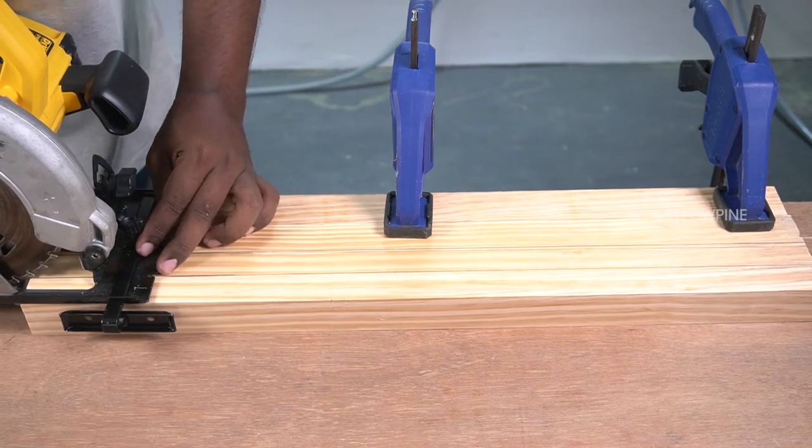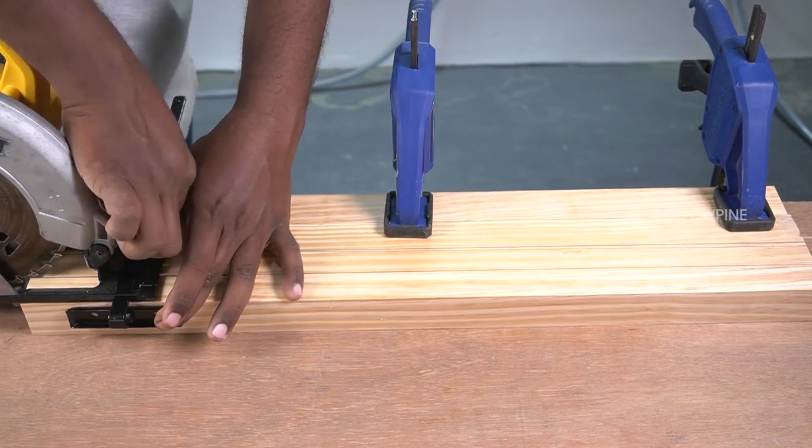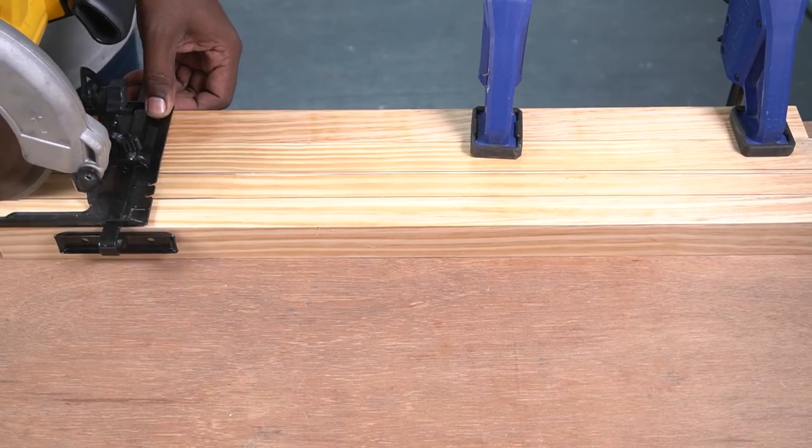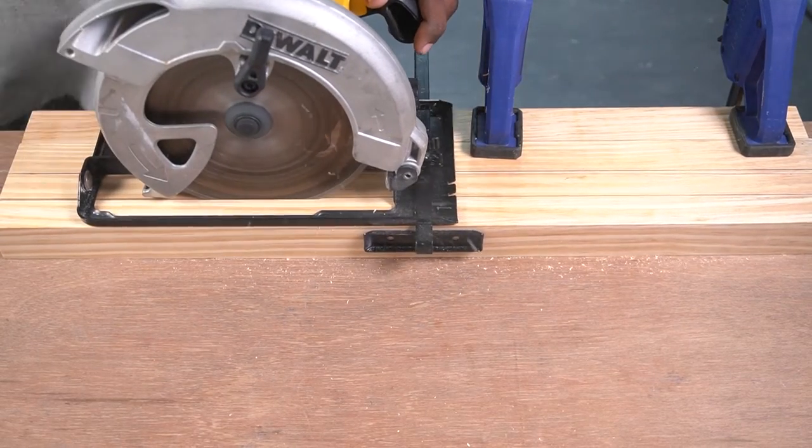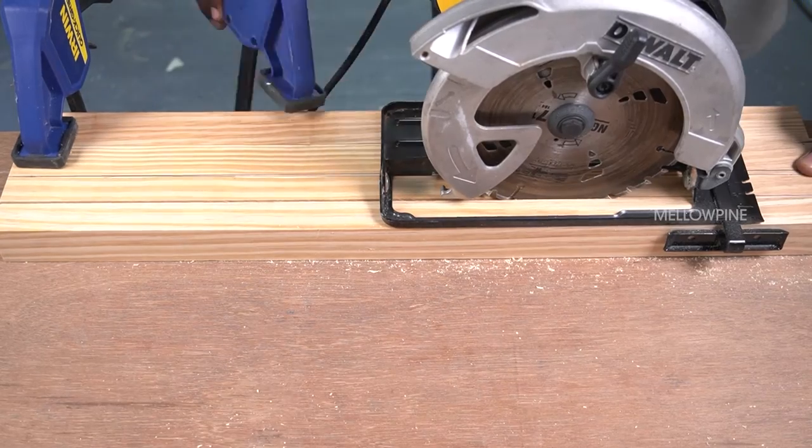Now set the rip fence so that the blade falls just inside the groove boundary you marked. Once everything is in place, turn on the circular saw and make the cut. Readjust the clamps whenever it blocks the circular saw.